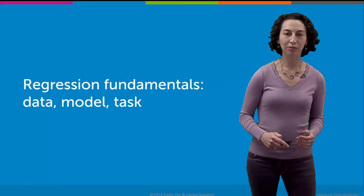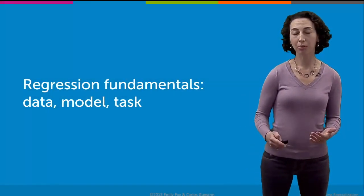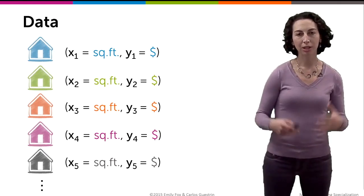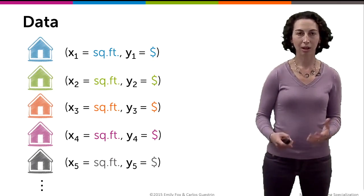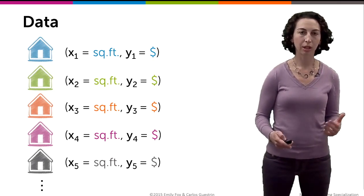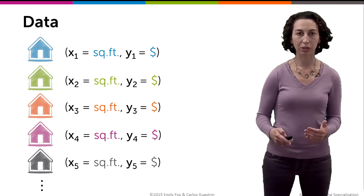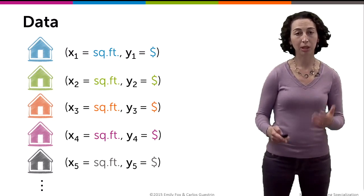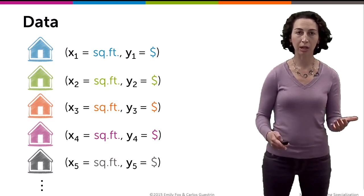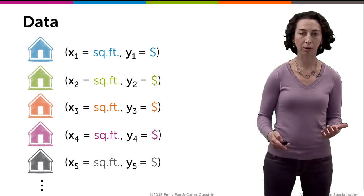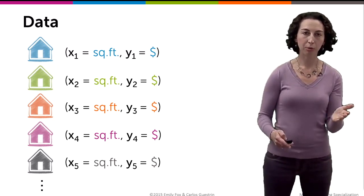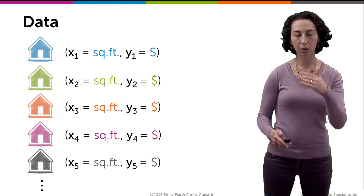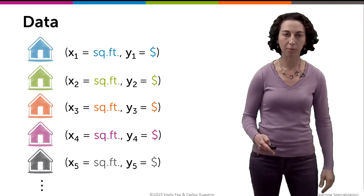Let's go through some regression fundamentals: what's our data, what's the model, and what's our task of interest? We're going to take all our data — all the houses that sold recently — and for each one, record some information. In the case of simple regression, where we're using just one variable to predict house price, specifically square feet, we record how many square feet each house had and the price it sold for. The variable x represents the input to our model.